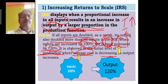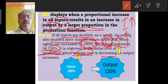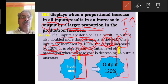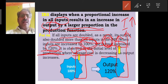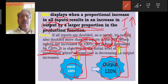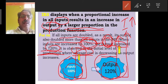The input level increases from S to H. At the same time, output can be increased. We can understand that output increases by 120%, which is more than the 100% level of input. This shows that input is increased by 100% while output increases by 120%.